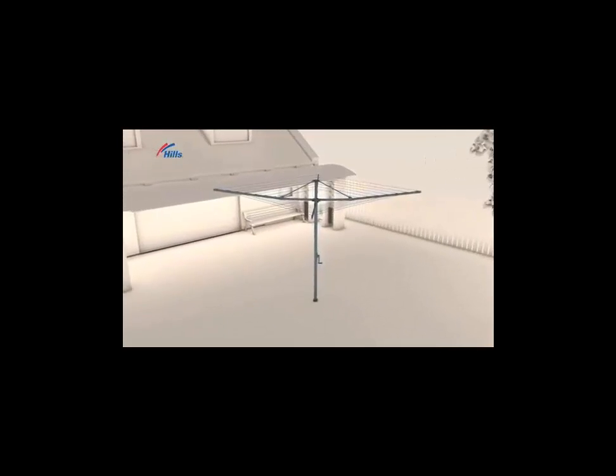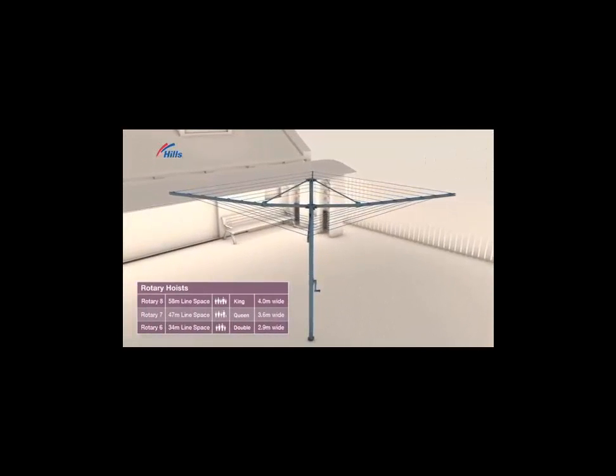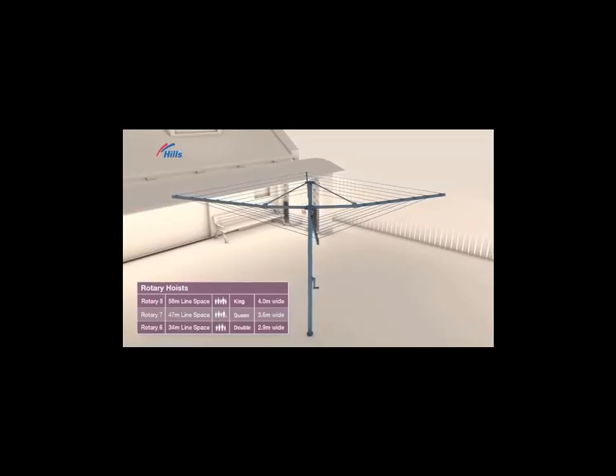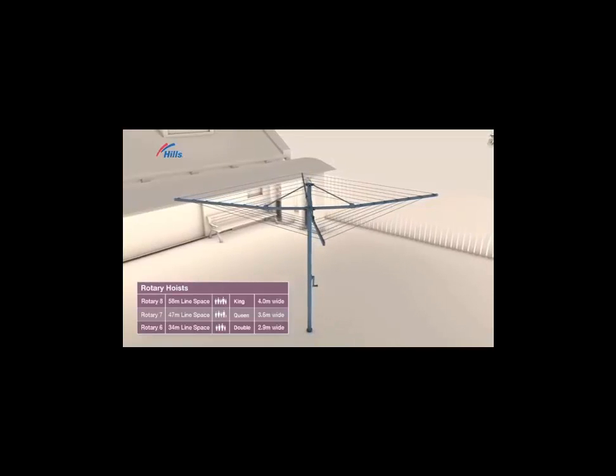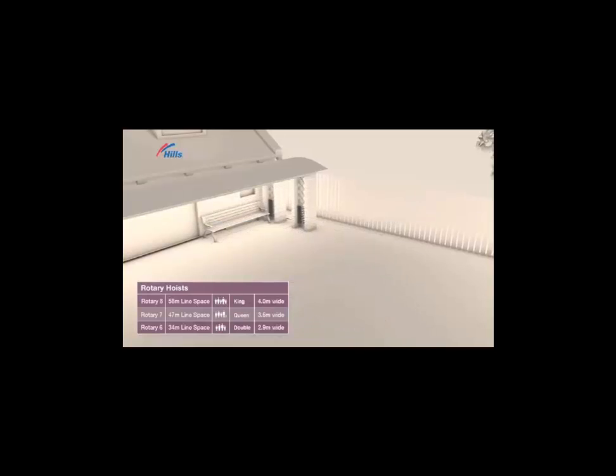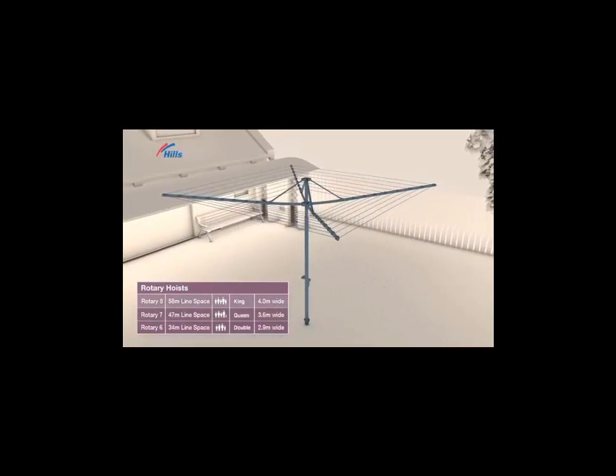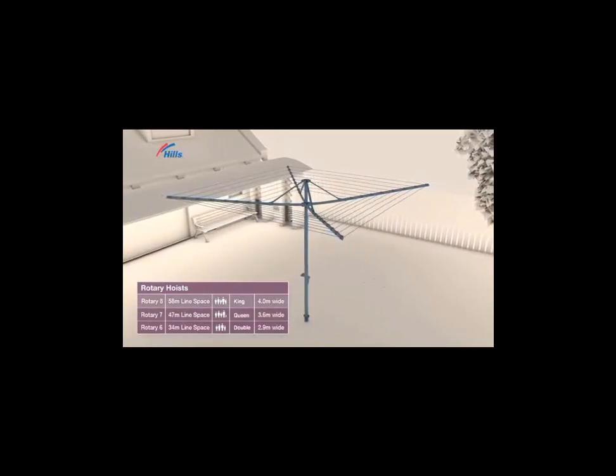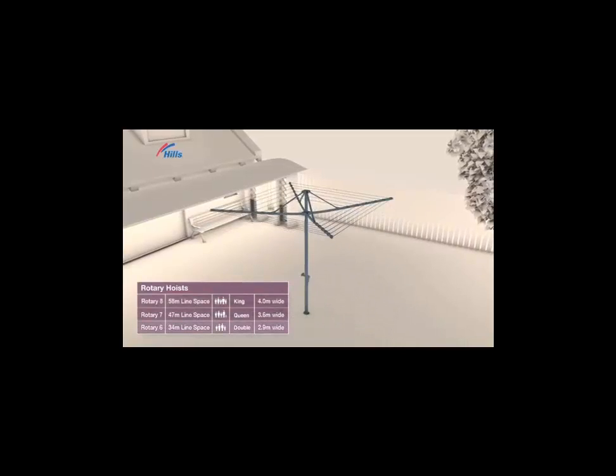If you have a good-sized backyard and regularly do a full family load of washing, one of the rotary models could be right for you. Depending on how much line space you need and room you have, choose from the largest Rotary 8 with a massive 58 meters of line space, down through to the Rotary 6 with 34 meters.